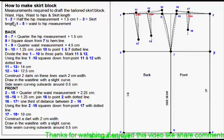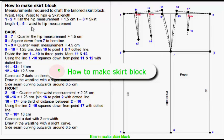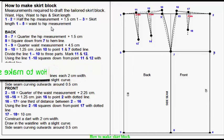1-2: Half the hip measurement plus 1.5 cm. 1-3: Skirt length. 1-5: Waist to hip measurement.